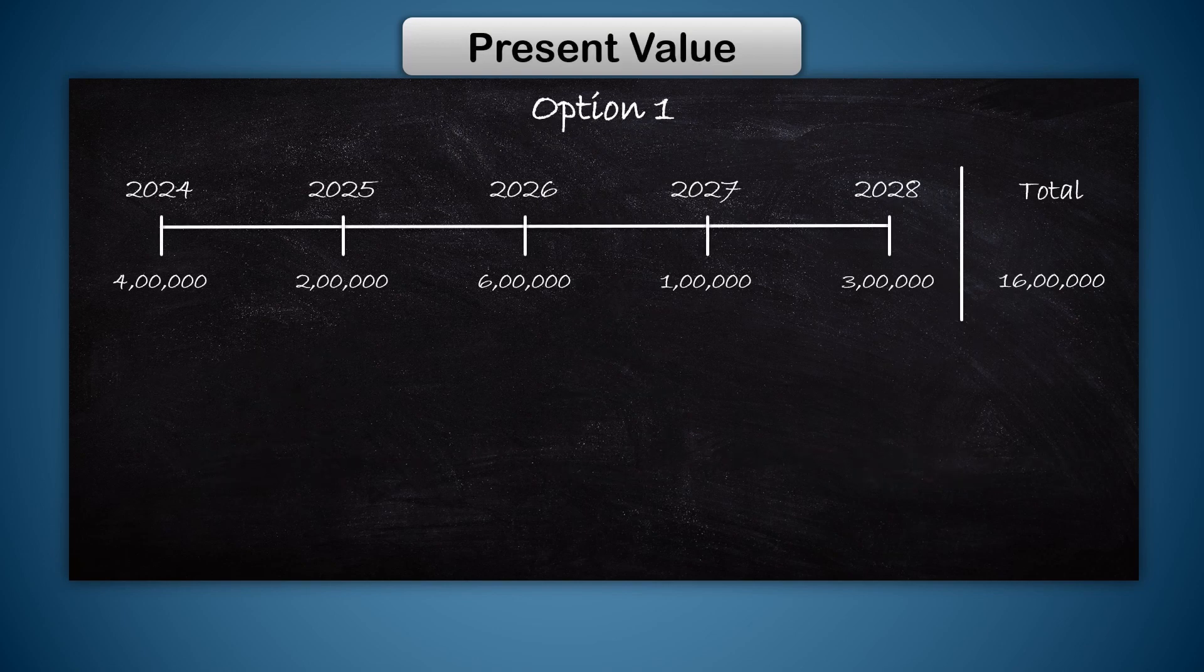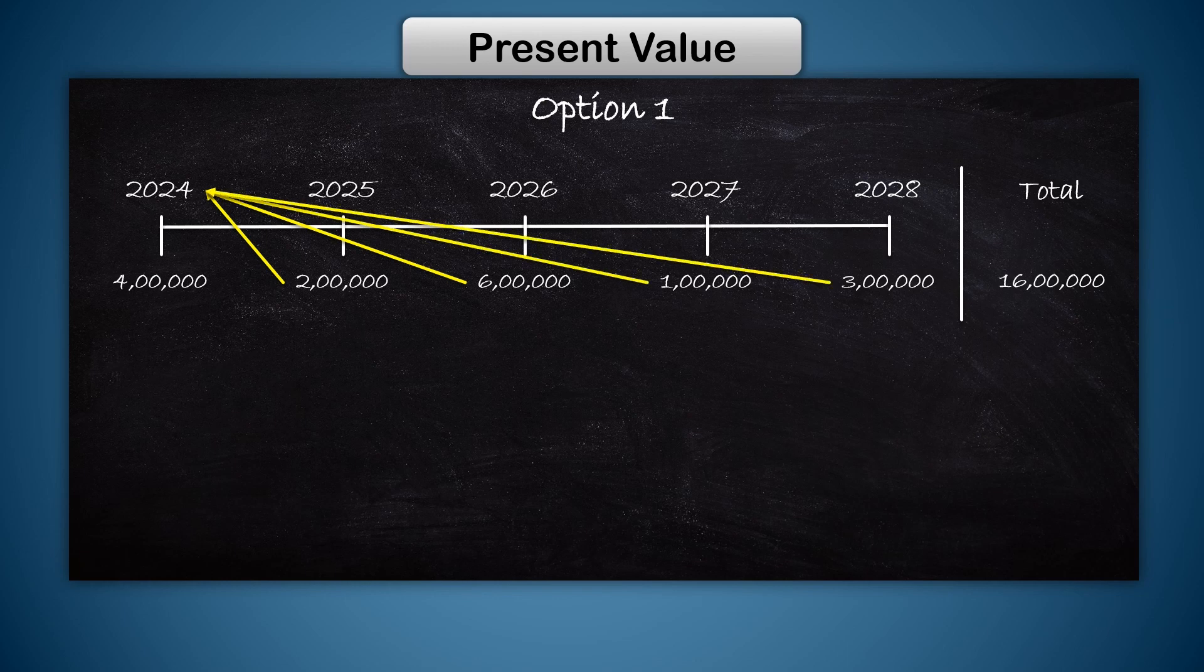Now let's move on to the present value approach. Here we want to translate all amounts to their value as on the first day of the cash flow, or in 2024. Here too, I am taking the same 6 percent inflation rate for discounting.